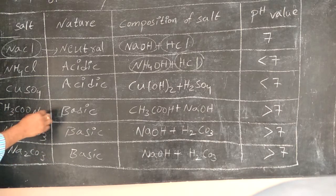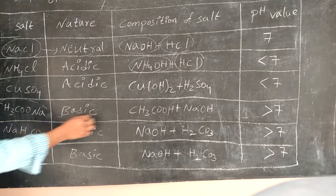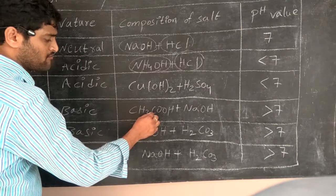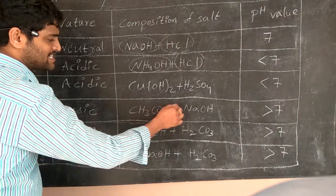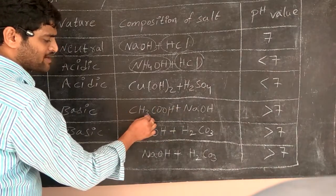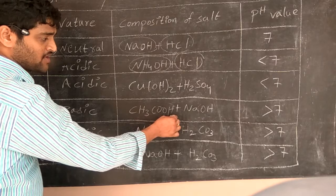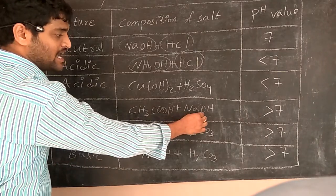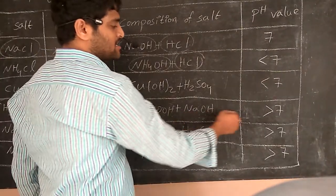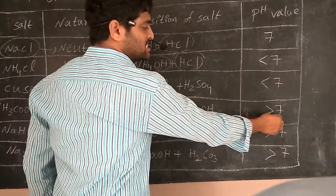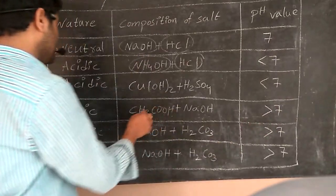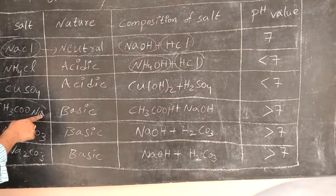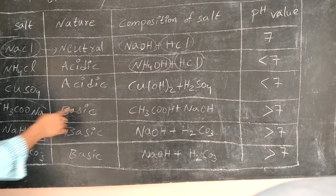The next salt is basic in nature, which is formed by the combination of a weak acid H2CO3 and a strong base NaOH. The resultant pH value is greater than 7, that's why this salt is a basic salt.